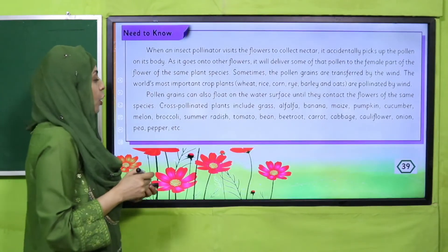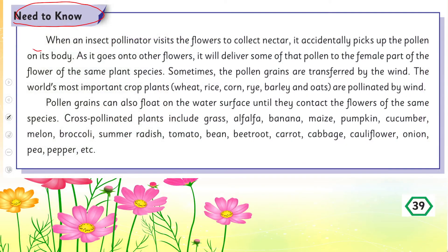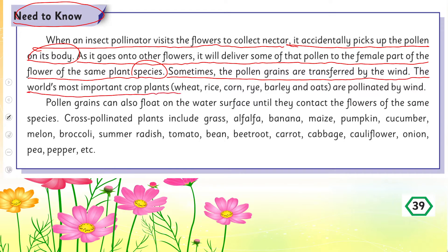Did you know, from page number 39: when an insect pollinator visits a flower to collect nectar, it accidentally picks up pollen on its body. As it goes to another flower, it delivers some of that pollen to the female part of the flower of the same plant species. Sometimes pollen grains are transferred by wind. The world's most important crop plants — wheat, rice, corn, rye, barley and oats — are pollinated by wind.